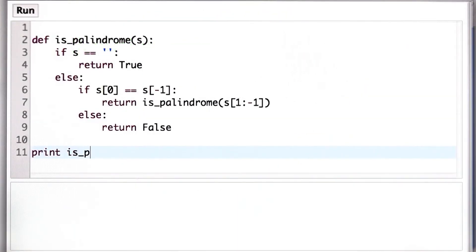The first thing to test is the base case. So we'll pass in the empty string. And the empty string is a palindrome, so it should give us the result true, which it does.